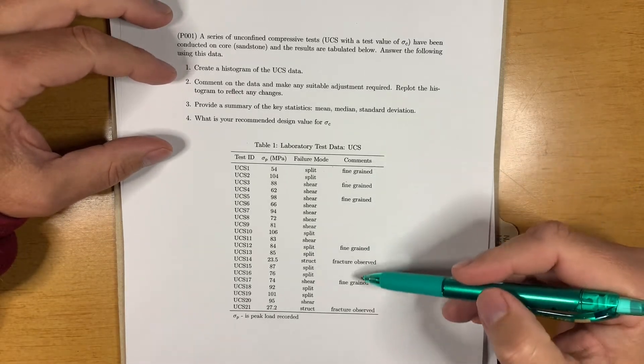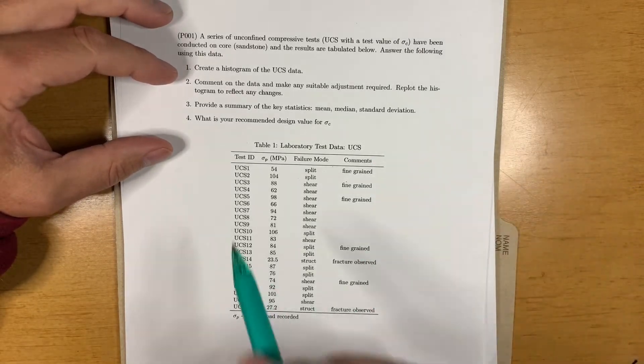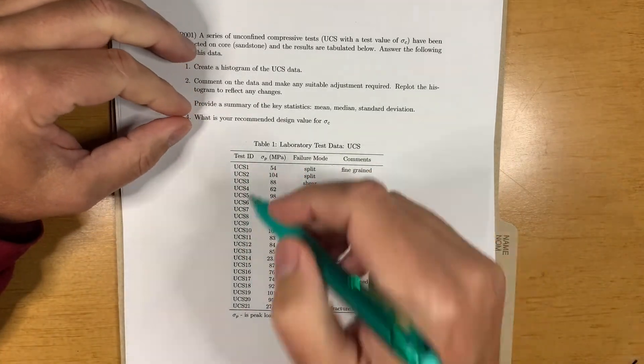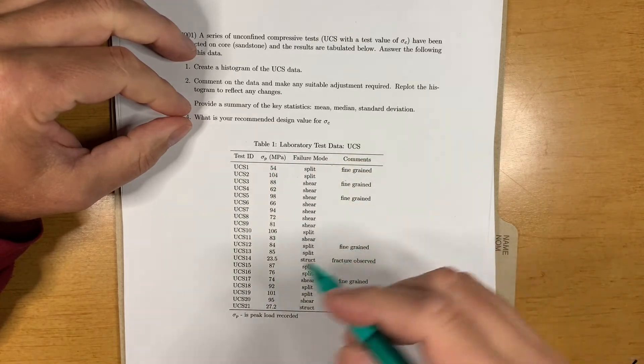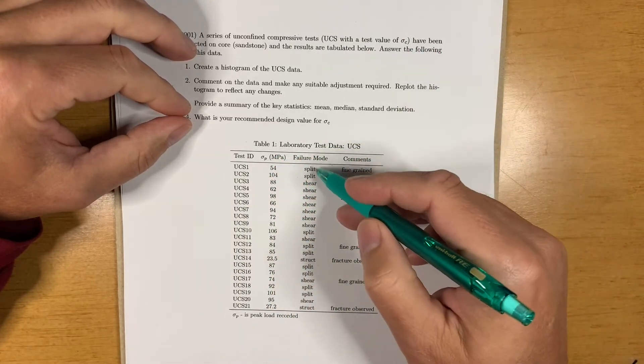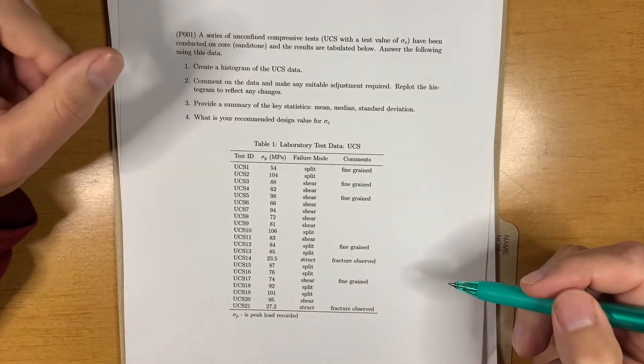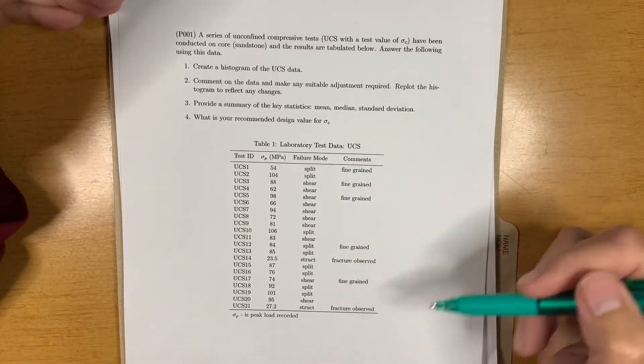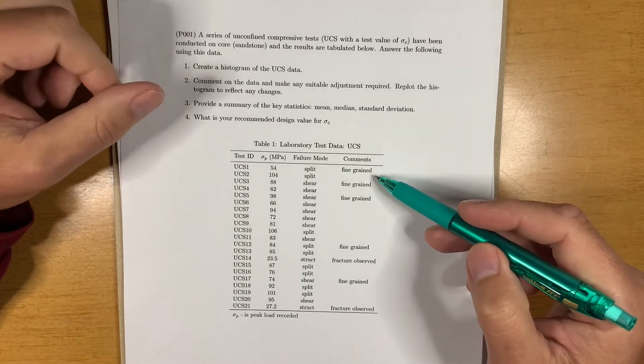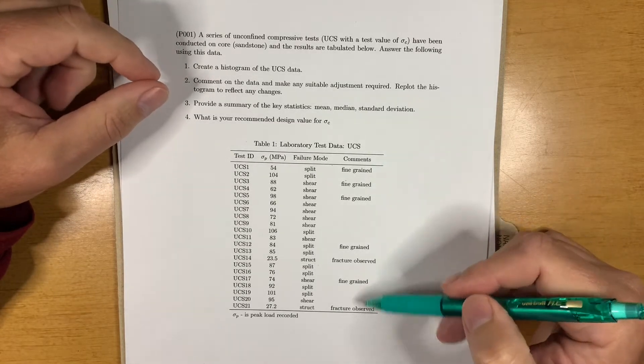So, here's our data here, the test ID, the UCS value, or the peak value in the test, which actually is really equivalent to sigma C. A little description of what type of failure occurred, which gives us some clue as to how the test worked out. And then a few comments about the test.